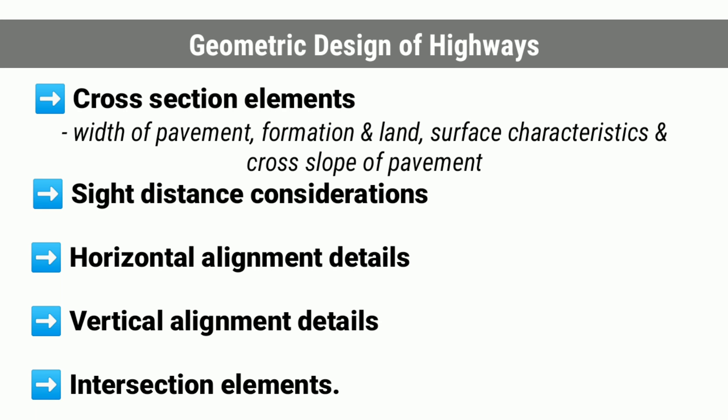Under cross-section elements, the considerations for width of pavement, formation and land, the surface characteristics and cross slope of pavement are included. The sight distance, or clear distance visible ahead of a driver at horizontal and vertical curves and at intersections, governs the safe movement of vehicles. The change in road directions is made possible by introducing horizontal curves. Super elevation is provided by raising the outer edge of the pavement with respect to the inner edge to counteract the centrifugal force developed on a vehicle traversing a horizontal curve.